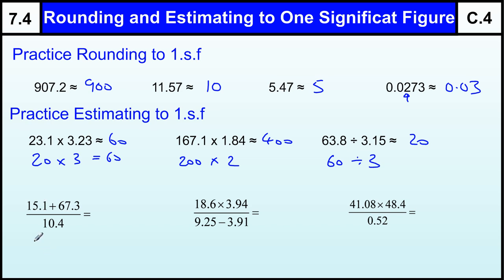And then we've got ten... No, sorry, not ten. Twenty plus seventy over ten. So that's ninety over ten, which is nine, approximately.